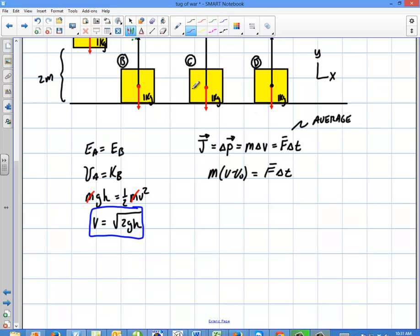So I'm going to say m times v final minus v initial equals the average force times the change of time. What am I looking for here? I'm looking for the average force, and I have everything else. So the mass was one. The v final is zero minus the v initial, and it was going down, right? So I have to make this negative square root of 2gh, square root of 2 times 10 times 2, close parentheses, equals average force times 0.1.